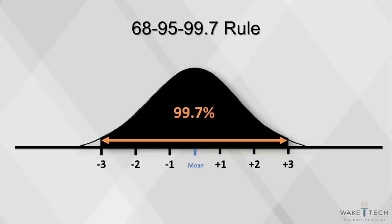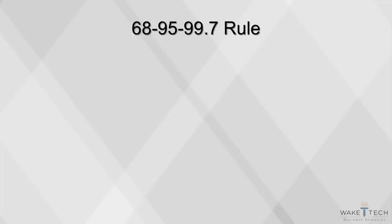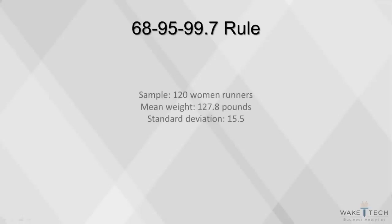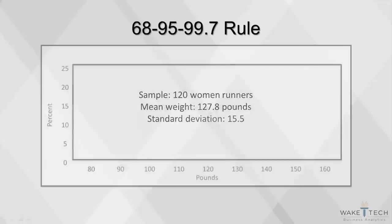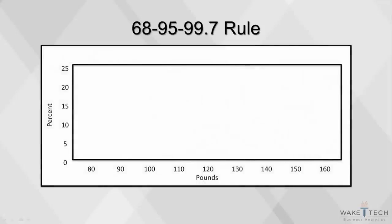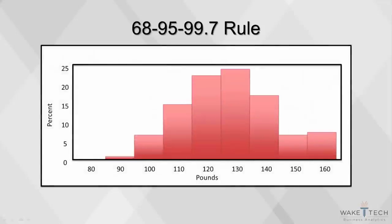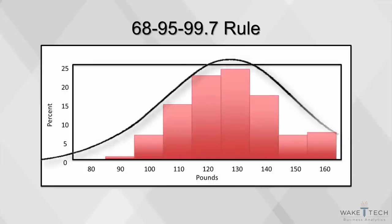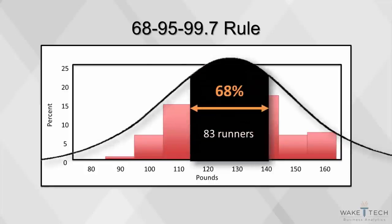This 68-95-99.7 rule is true for all normal curves, no matter their shape. But how good is this rule for real data? Here's an example: the mean weight of 120 women runners in a sample is 127.8 pounds, and the standard deviation is 15.5. 68% of our 120 runners is about 83 runners.